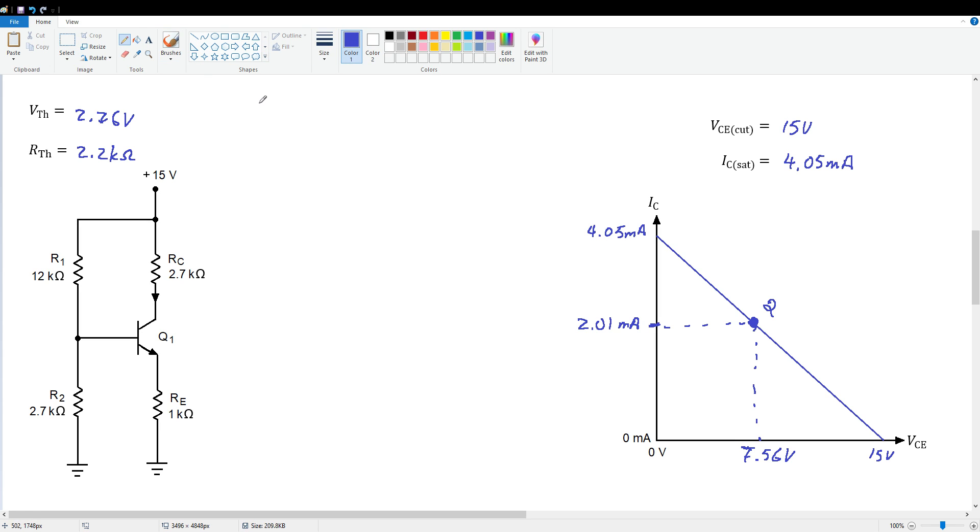With a beta of 50, we end up with 2.06 volts divided by 1044 ohms. So if beta is 50, our ICQ drops down to 1.97 milliamps. Now, on this graph, you wouldn't really see any difference in the vertical displacement of this current, but it has decreased a little bit.